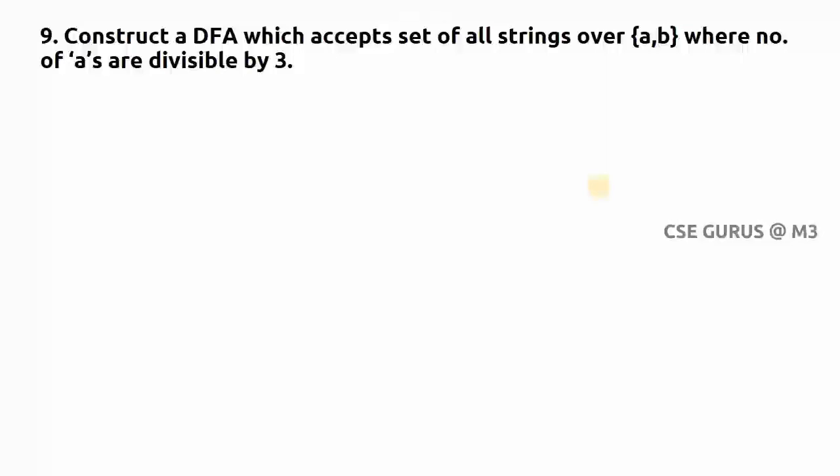So in the previous question it was even, in the sense indirectly it was asking for number of a's divisible by two. Now it is asking for three. So what you need to do: here three means three remainders you need to get.